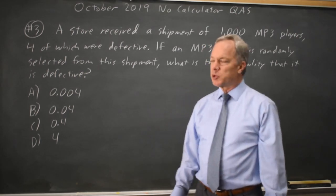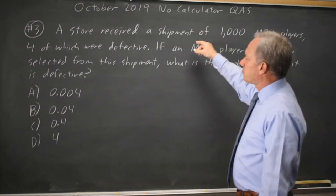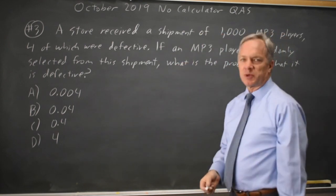This is calculator question number three. College Board is asking about a probability given a shipment of 1,000 MP3 players, four of which are defective.